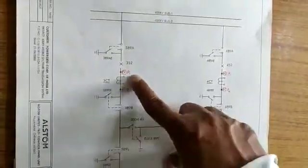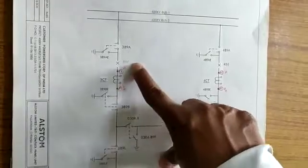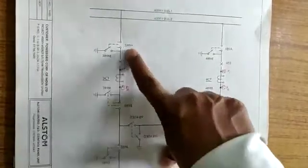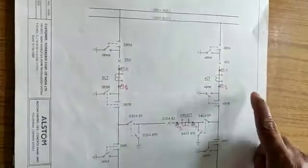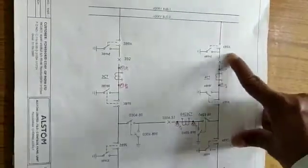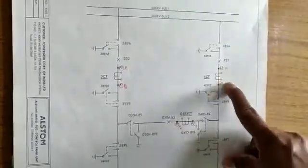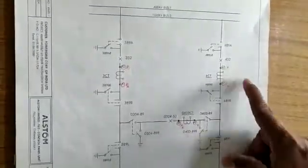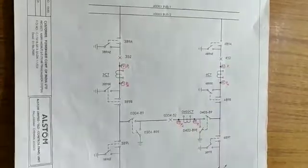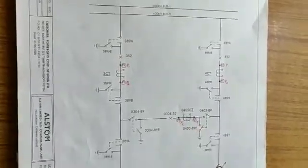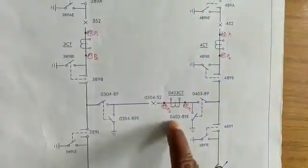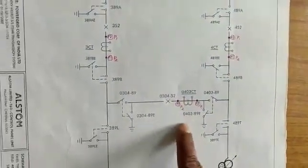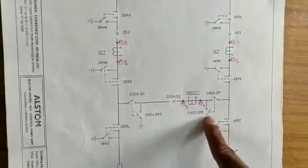For bus bar protection, the star point must be formed on the P1 side for the CT connected to bus 1, and likewise for the CT connected to bus 2. For the tie CT, whichever core is used for transmission line protection requires the star point on the P2 side, and if used for transformer protection, the star point is formed on the P1 side.